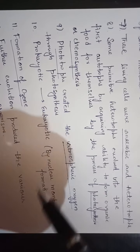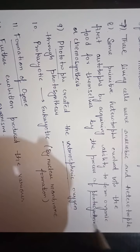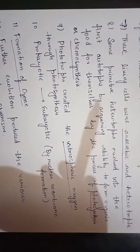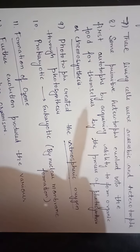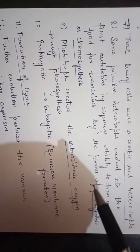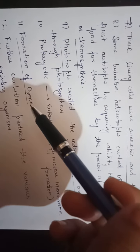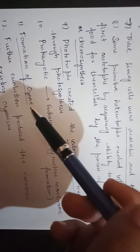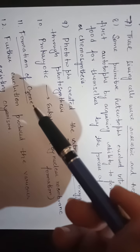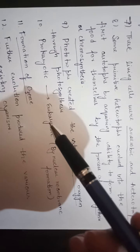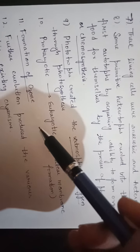When oxygen became present in the atmosphere, which was not present earlier, the formation of ozone occurred. The formula for ozone is O3.